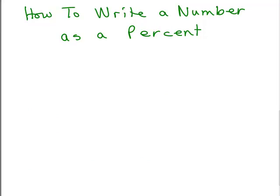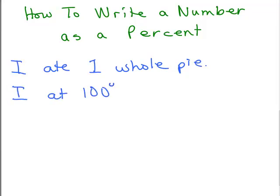First, I want you to think about these two sentences. Say, I ate one whole pie and then I ate 100 percent of the pie. I hope you all agree with me that this really means the same thing. If you eat one whole pie, that means you've eaten 100 percent of the pie.